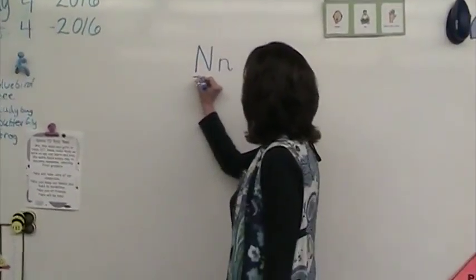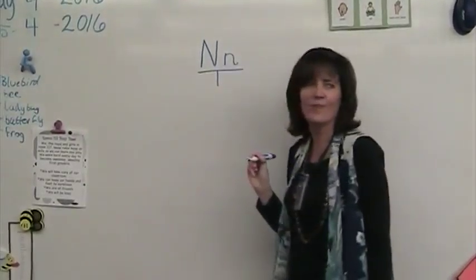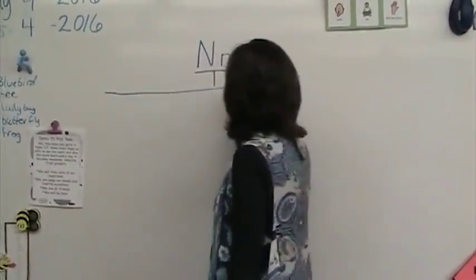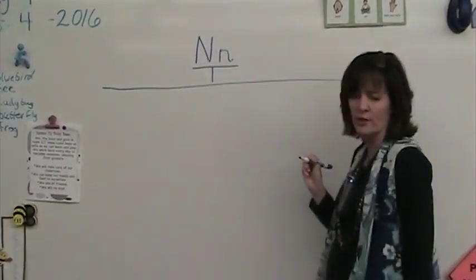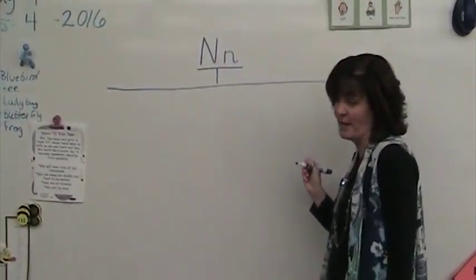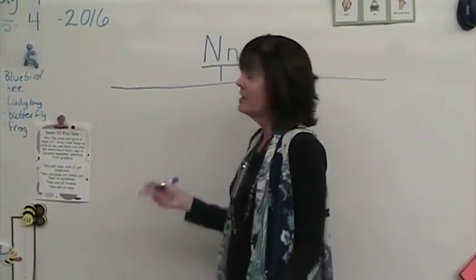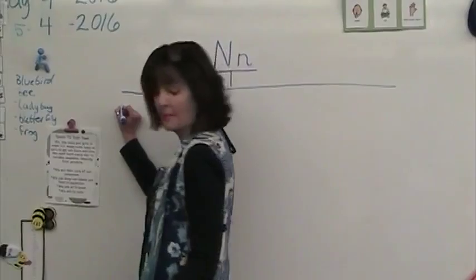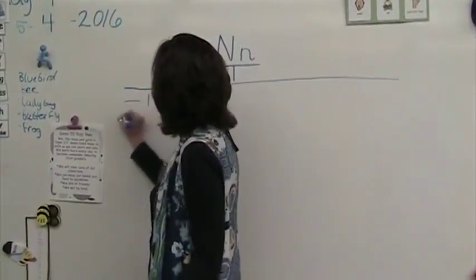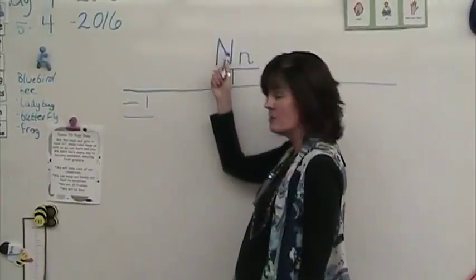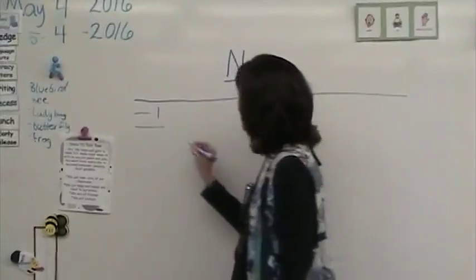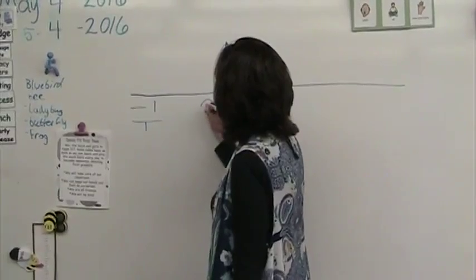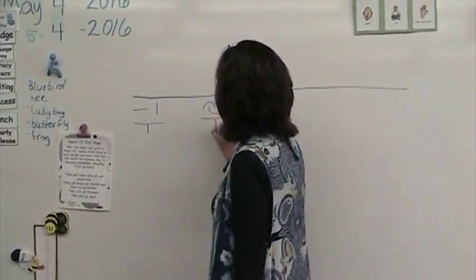And this right here is our tell me more. Now we're going to draw a great big line right here because we're going to learn a lot of things about letter N. We always start with our straight lines. Do you think letter N has straight lines? I think so. I think it does. Look. Here's a straight line, straight line, straight line, and another one right there. Tell me more. That's our tell me more.